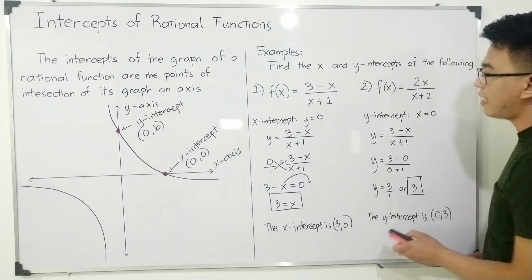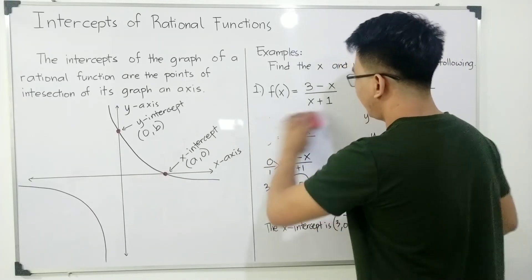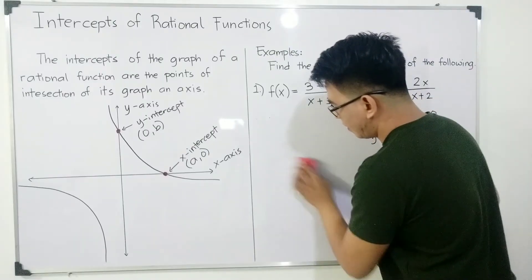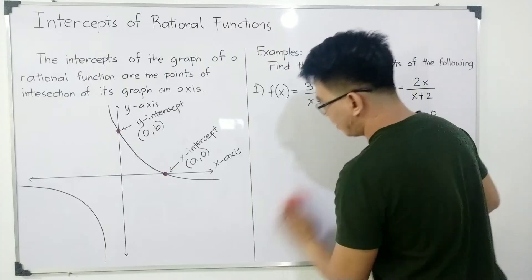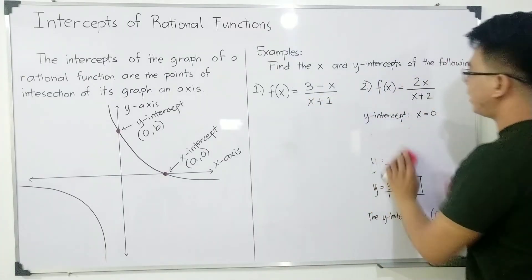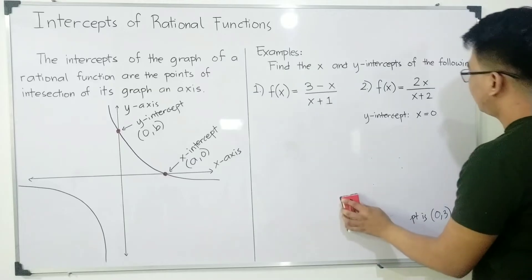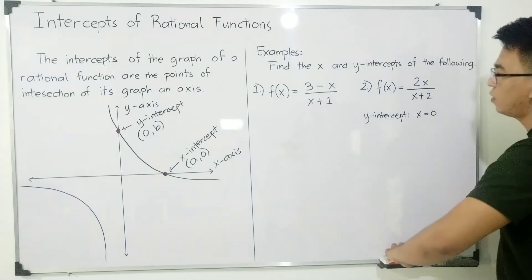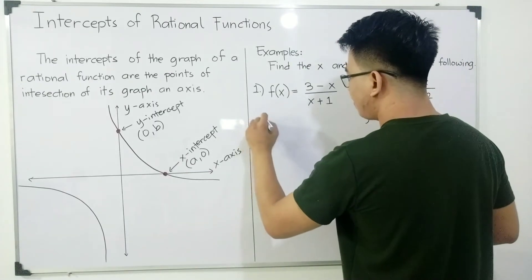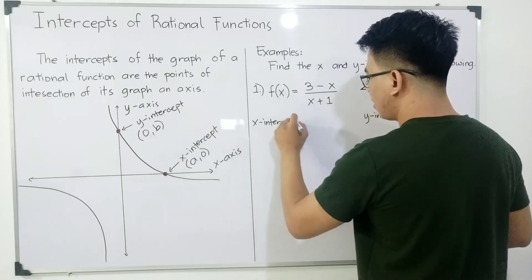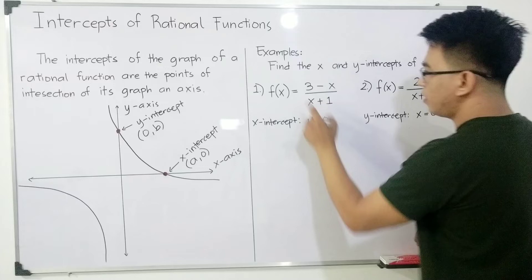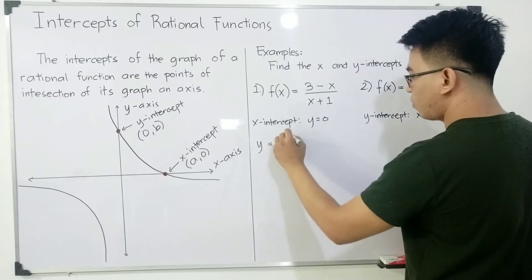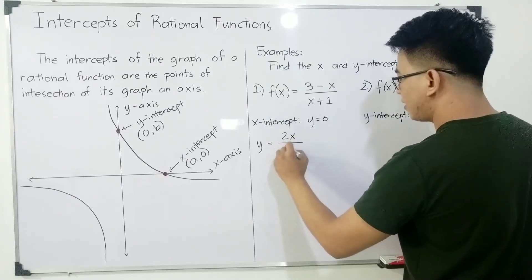Now let's move on with the second example. For the second example, we have f(x) = 2x/(x+2). So for the x-intercept, your y is equal to 0. It will become y = 2x/(x+2).